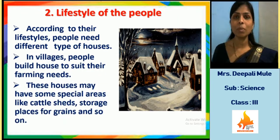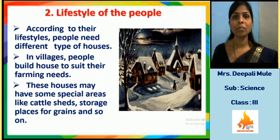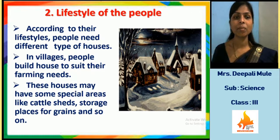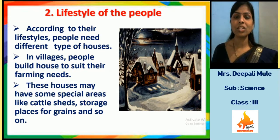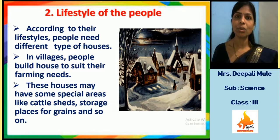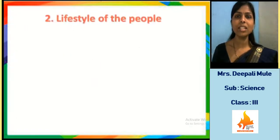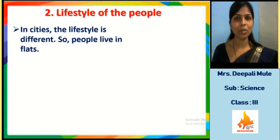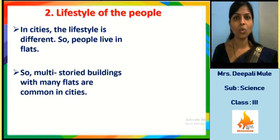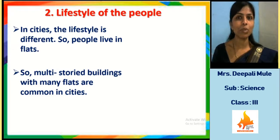In villages, people build houses in such a way that they can store everything and fulfill their farming needs. These houses may have special areas like a cattle shed and storage places for grains. In cities, people make different types of houses like row houses, bungalows, or apartments, depending on their lifestyle.